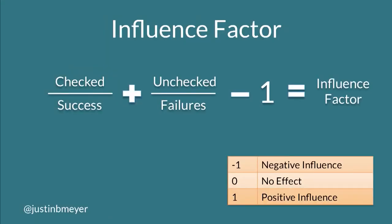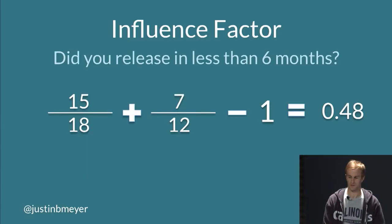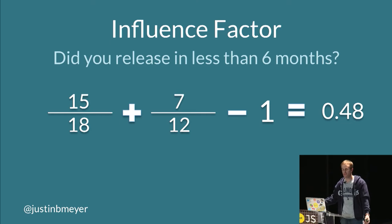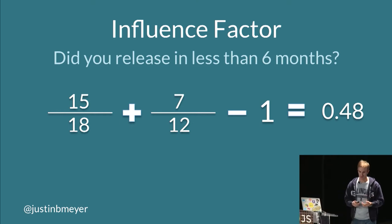To measure influence we use an equation where an ideal task would always be checked on every success and never checked on every failure — giving an influence factor of one. We rated all of our questions to see what the influence factor was. The most influential thing we found was: can you release something within six months? Most people would say yes — small projects are almost always much more likely to be successful.